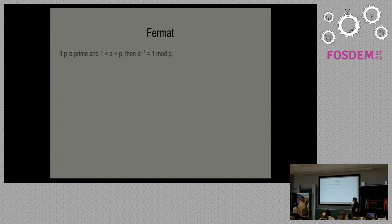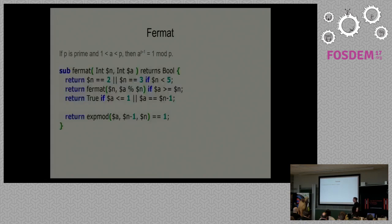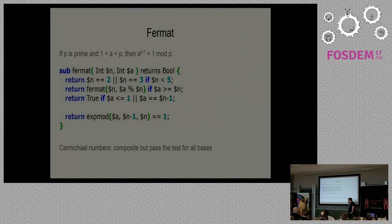Fermat came up with this little theorem: if we take an a between 2 and p−1 and raise it to the p−1 power, and if p is prime, it's 1 mod p. All primes have this property; some composites do, most don't. Here in Perl 6 there's some boilerplate mainly for small numbers, but it all comes down to expmod — that's easy. There is a problem: Carmichael came up and said there's a class of numbers where this is true for composites for every base, so you'll never be able to figure out those numbers are composite because they look prime based on this test.